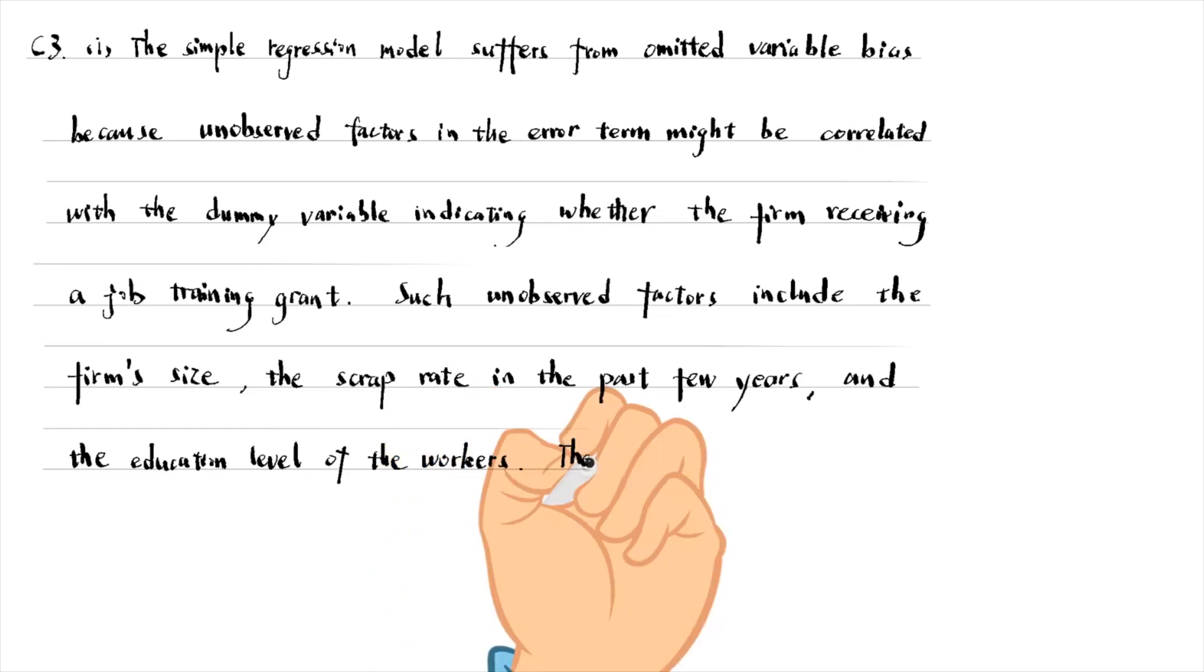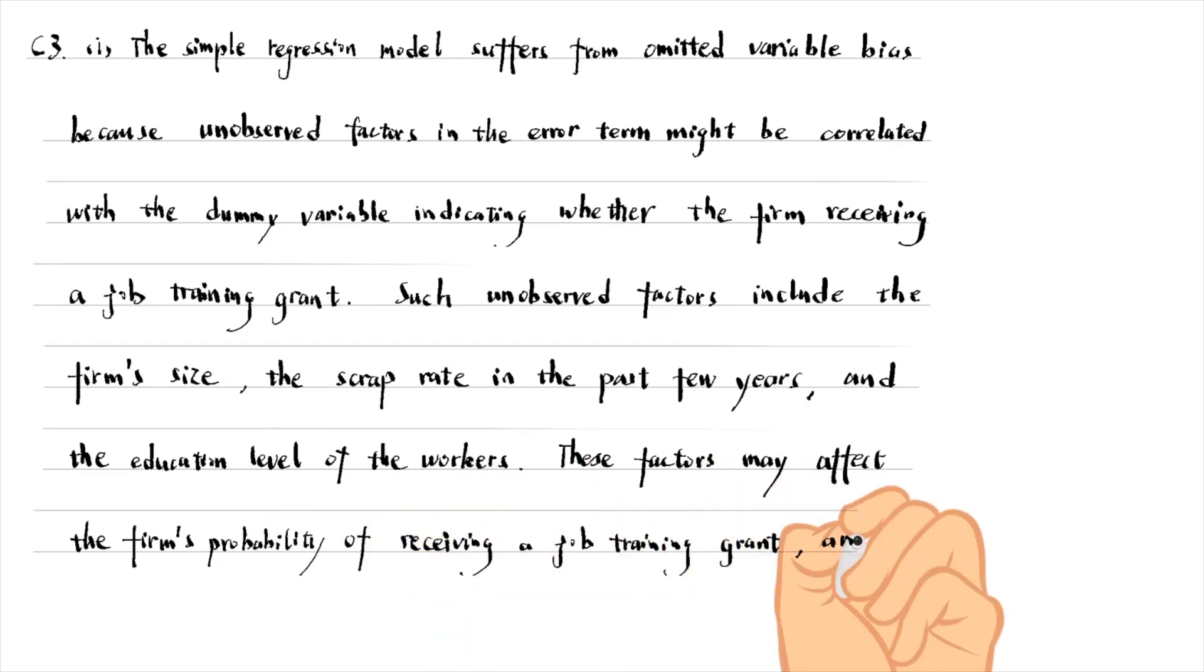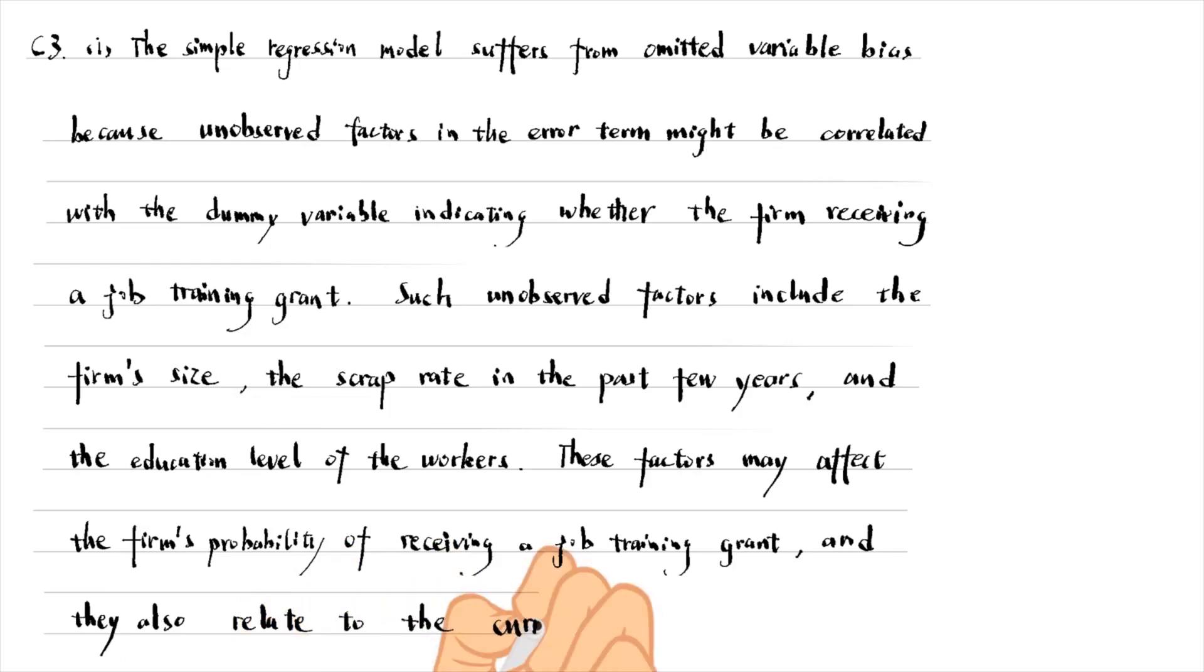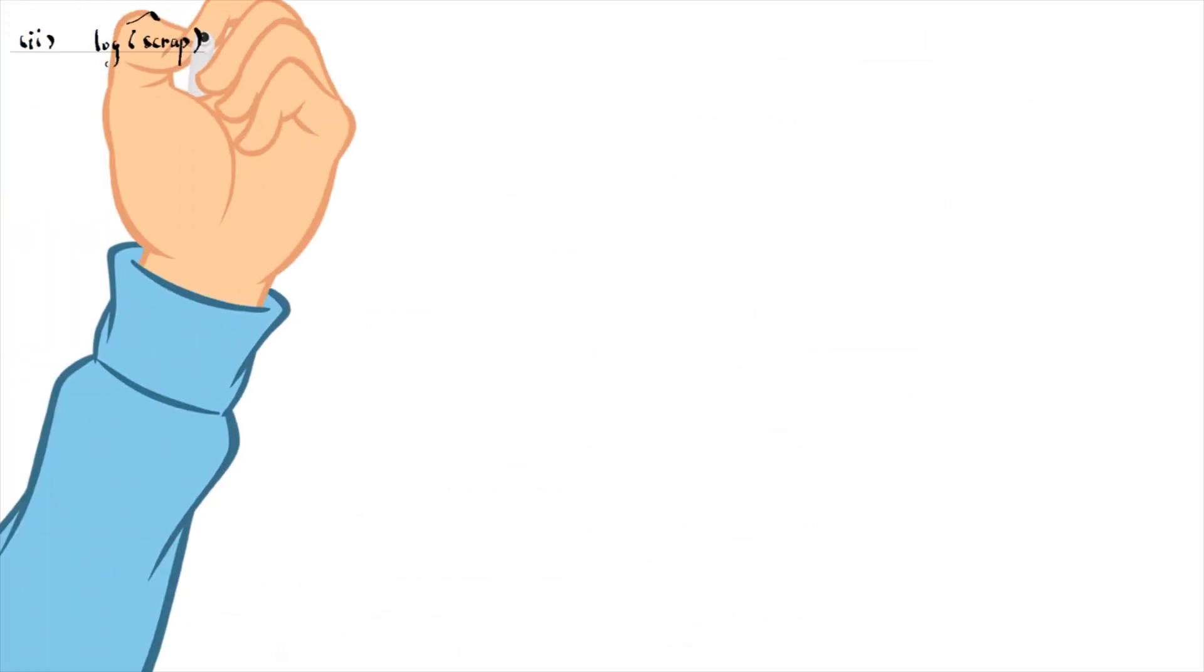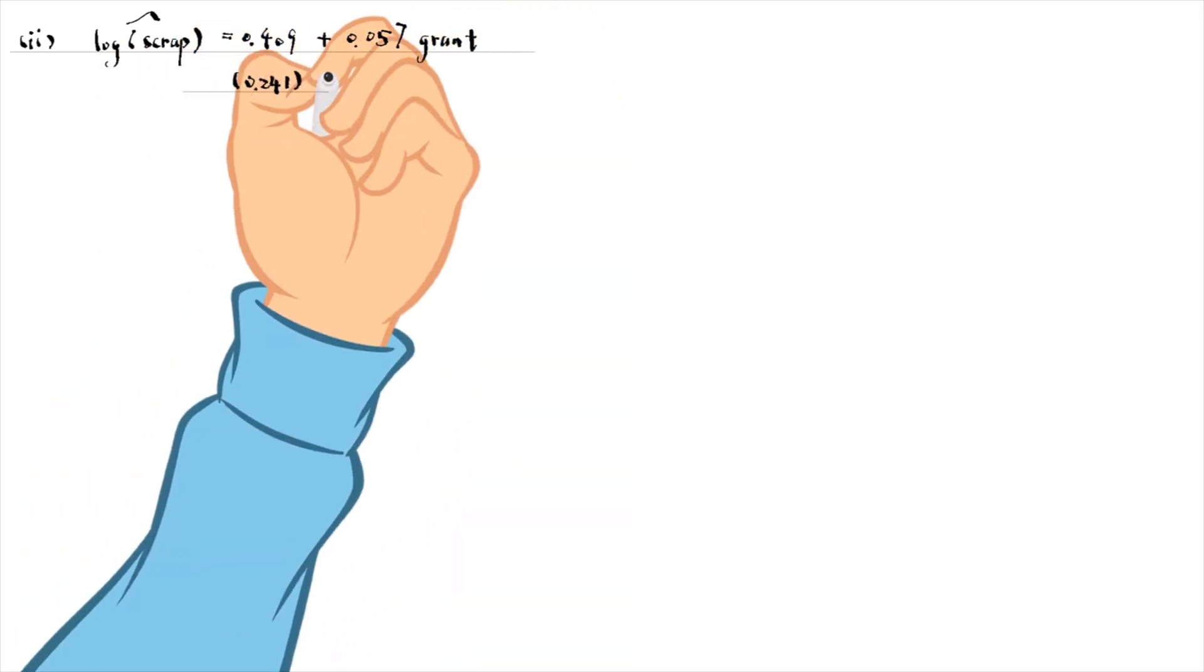These factors may affect the firm's probability of receiving a job training grant, and they also relate to the current scrap rate. The OLS estimates will be biased if they are omitted from the model. The simple regression gives a positive slope estimate which is not statistically significant at any conventional level.